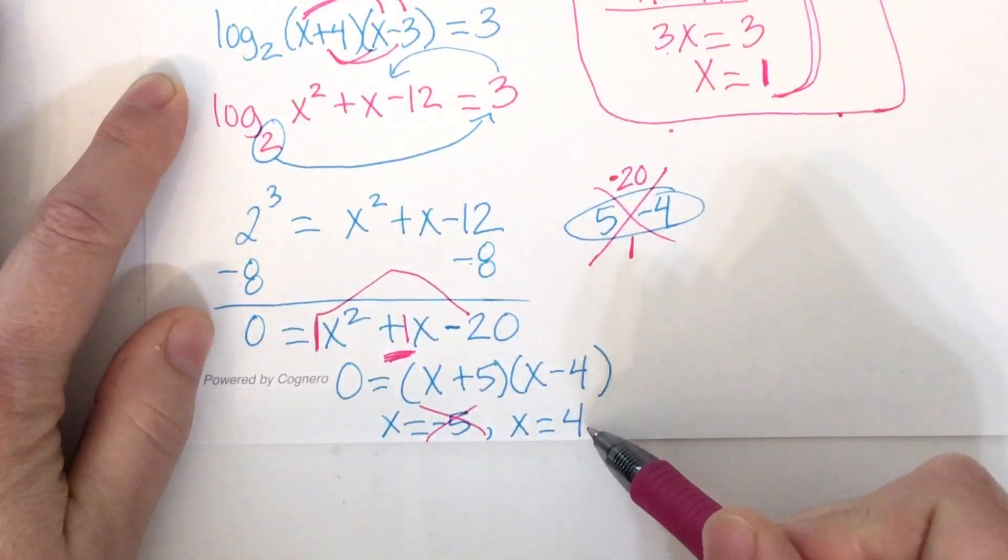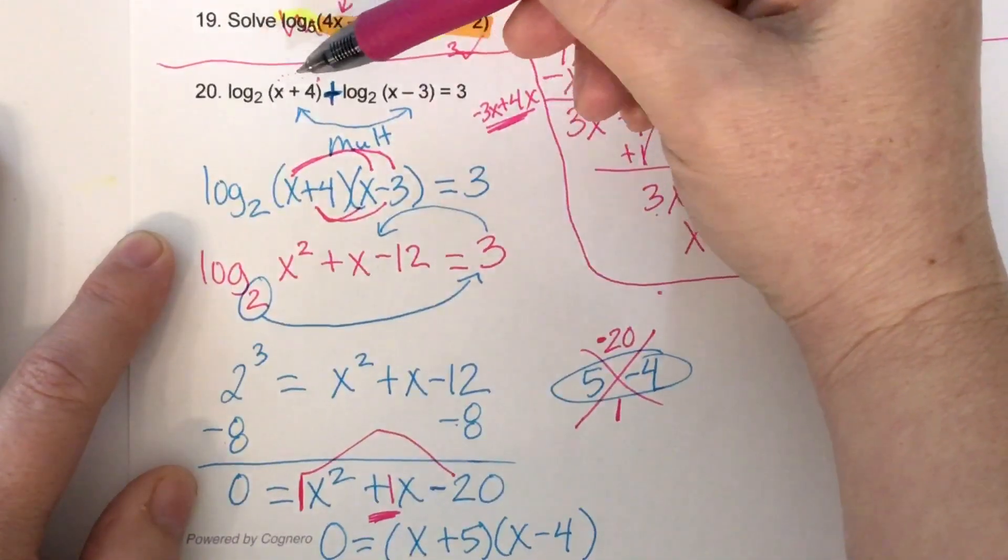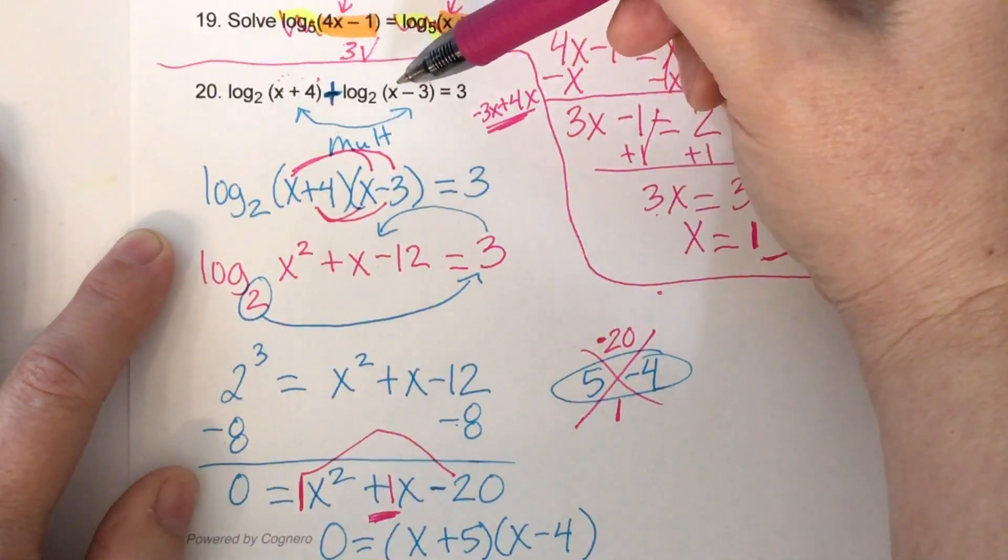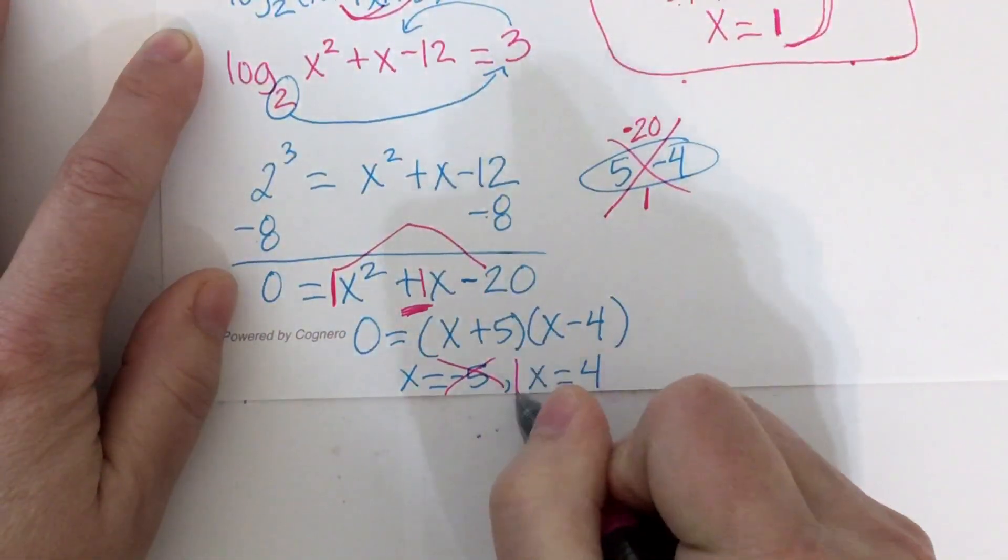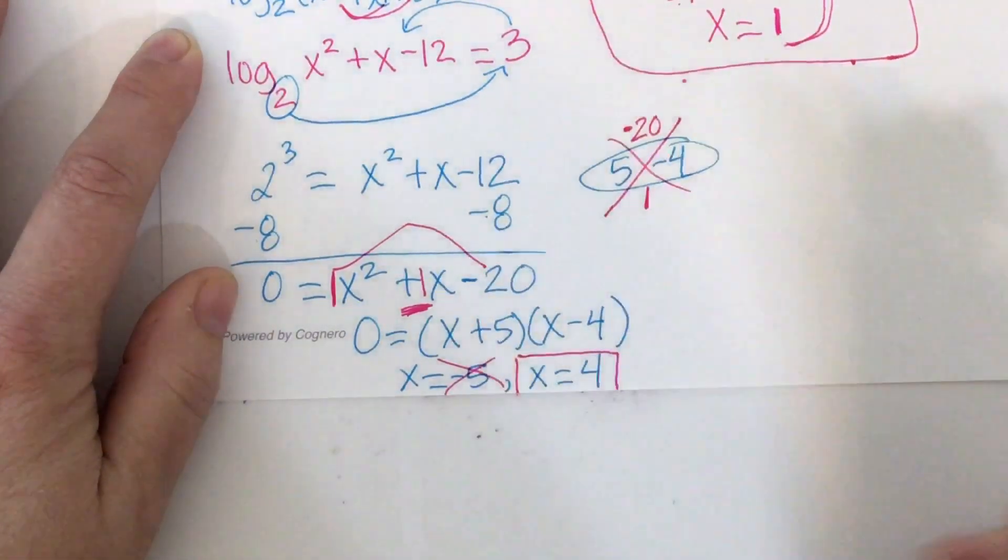So now let's try the 4. So if I put 4 in here, 4 plus 4 is 8. That's fine. And if I put 4 here, 4 minus 3 is 1. That's fine. It didn't give me any negatives or 0. So 4 is our answer.